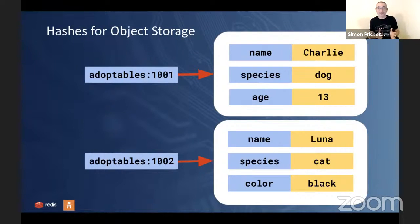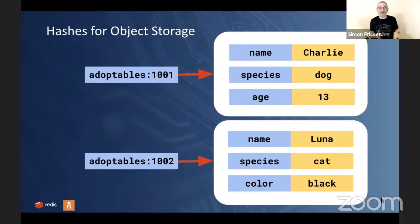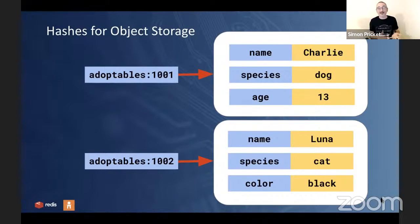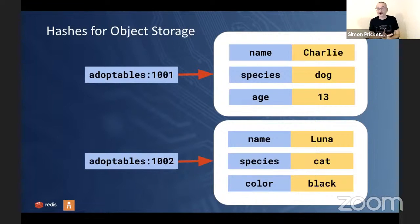Let's look at how to store data in hashes in Redis — that's like storing an associative array inside a key, a little Redis in a big Redis. Imagine I have adoptable animals at a shelter. In the key 'adoptables:1001', I have a dog called Charlie who's 13. In key 'adoptables:1002', I have a cat called Luna who is black. We don't have to store the same data in both hashes — the field names can be anything we like. There is no schema here, so the application needs to cope with potentially missing or different fields.